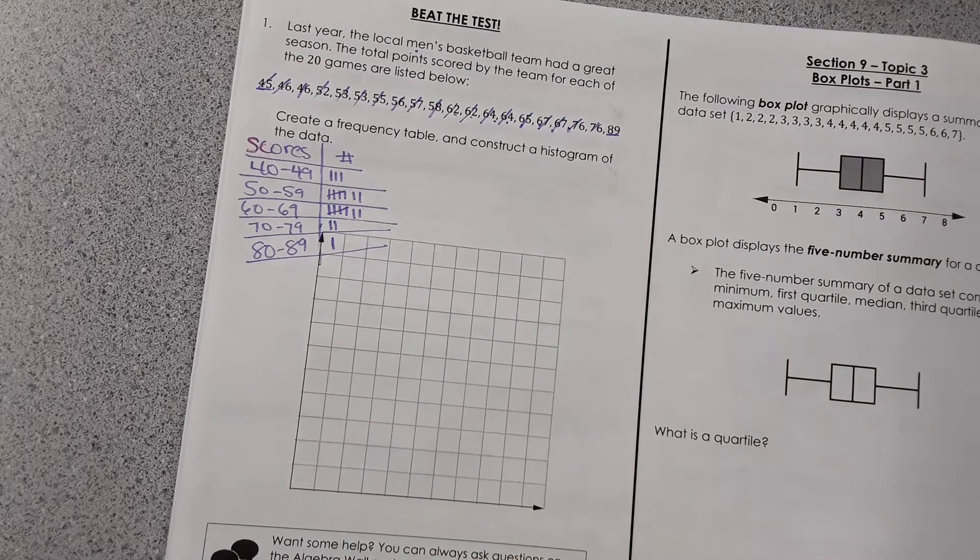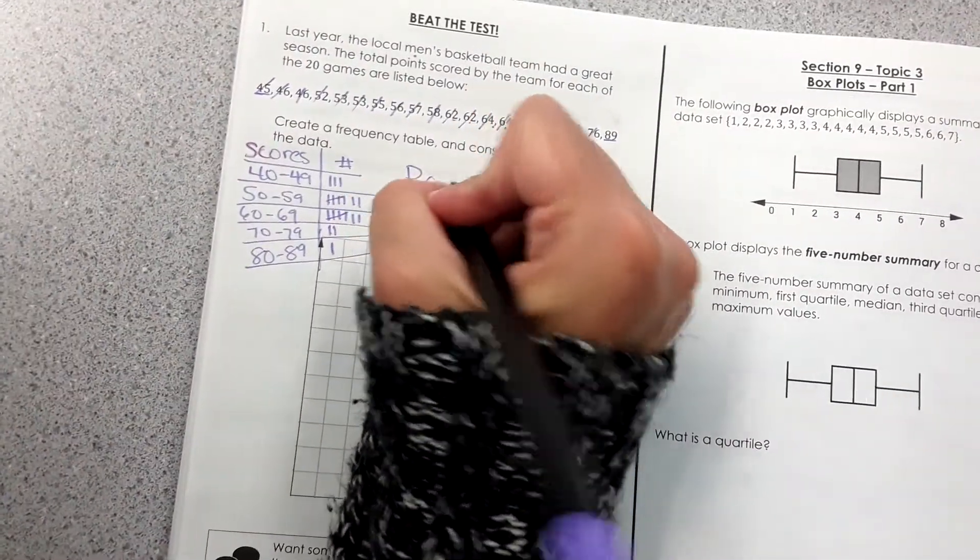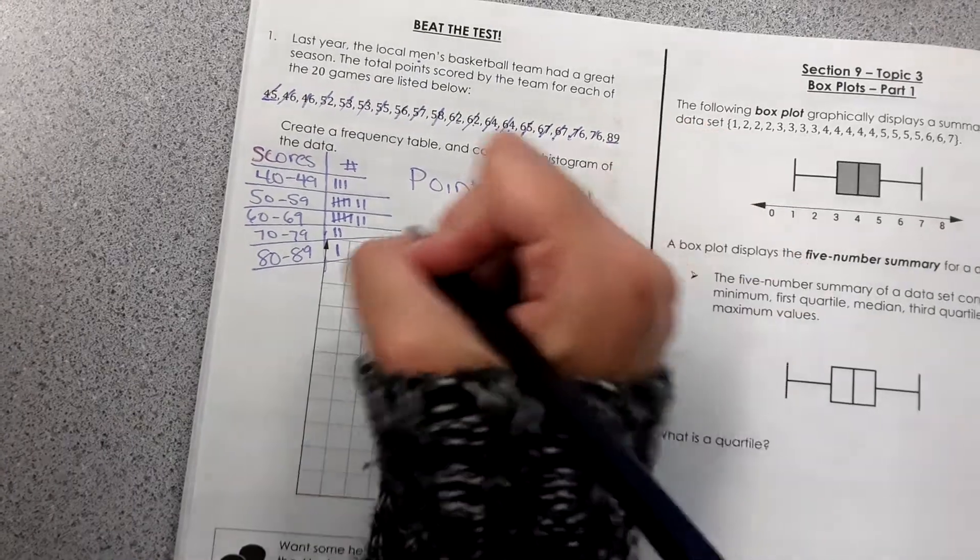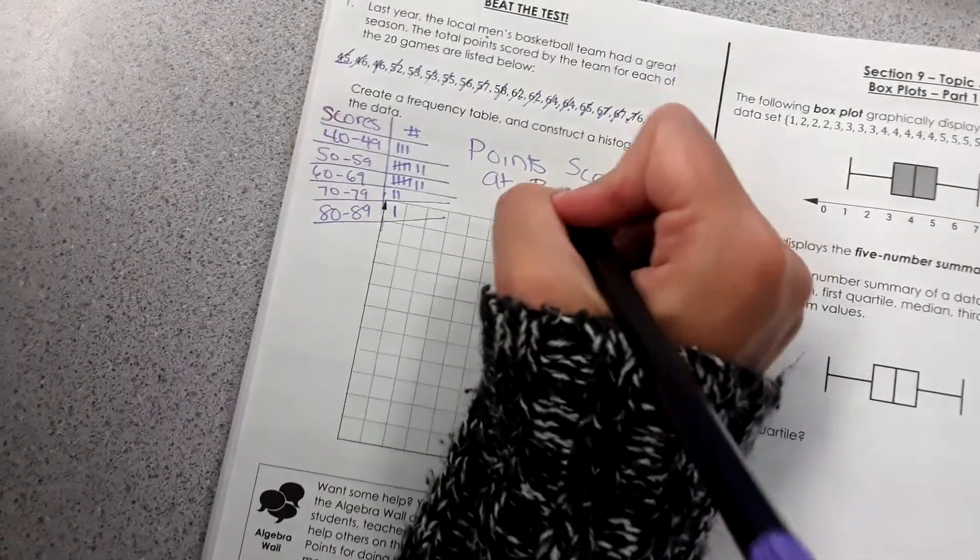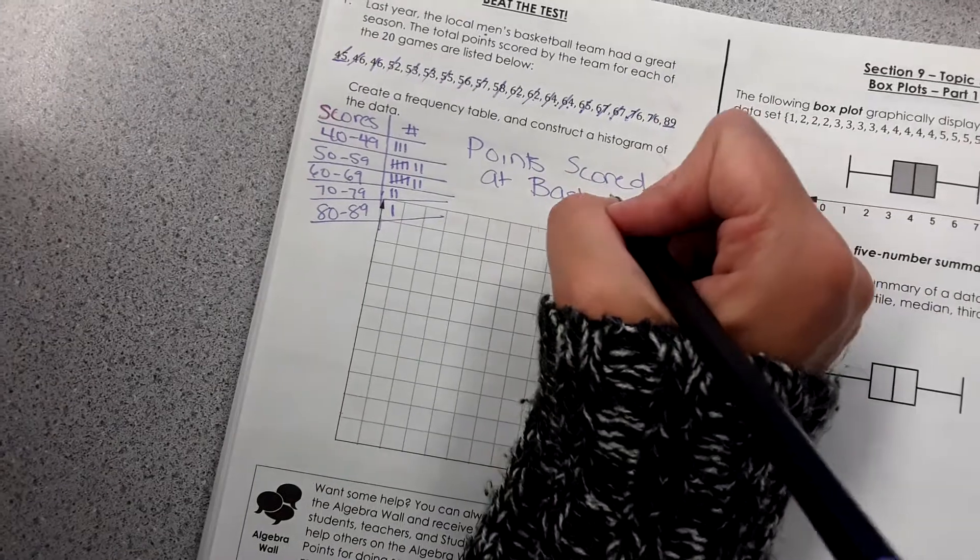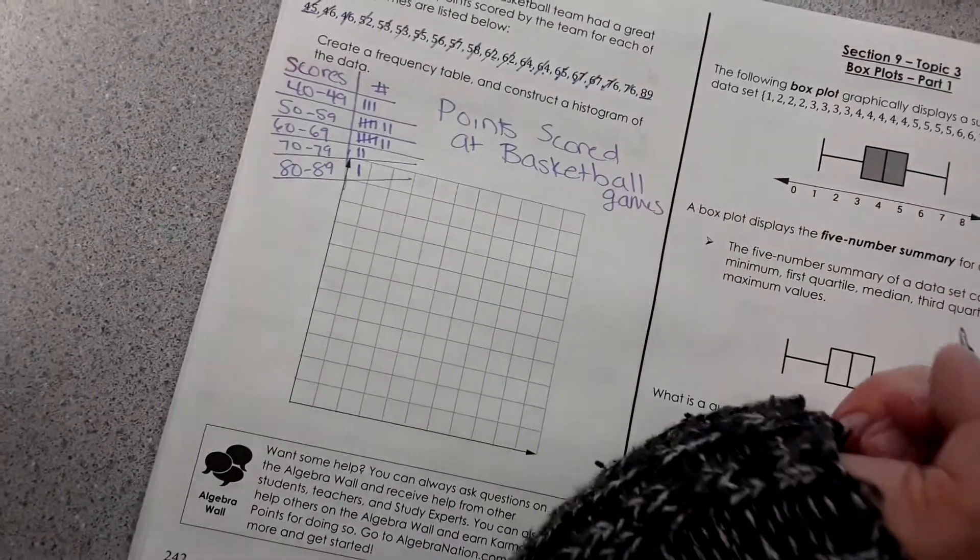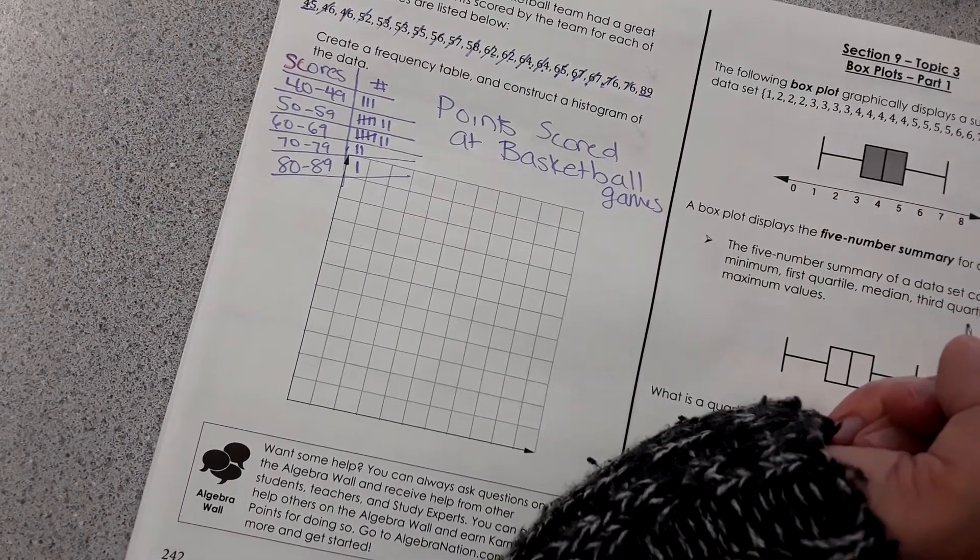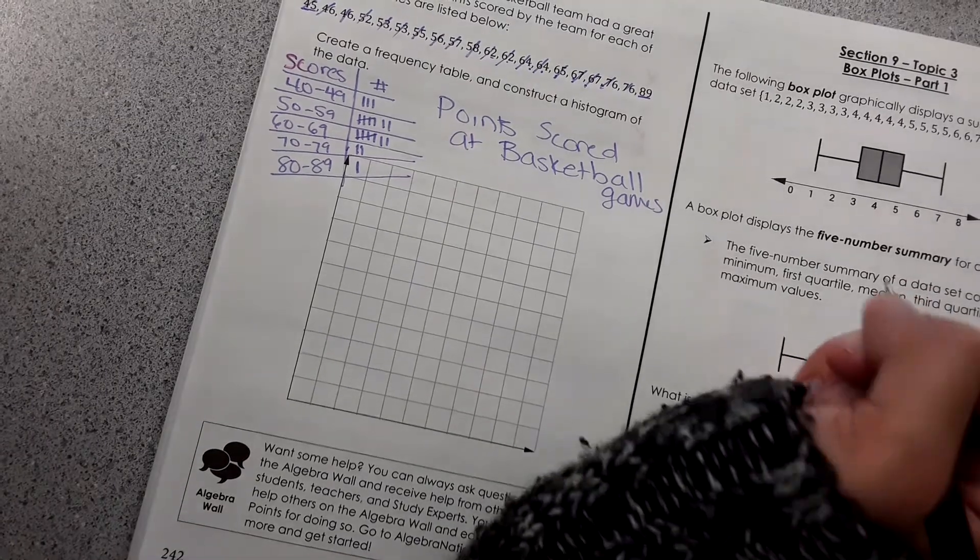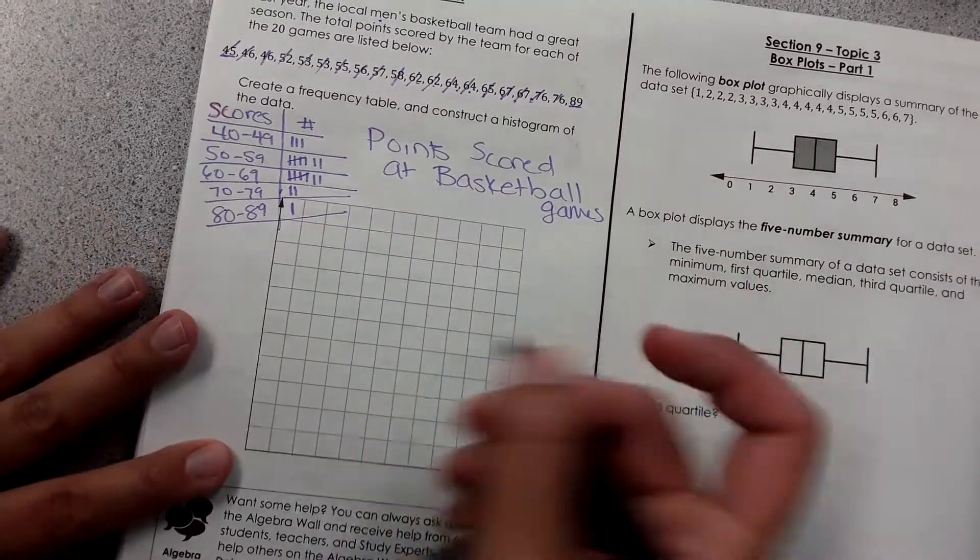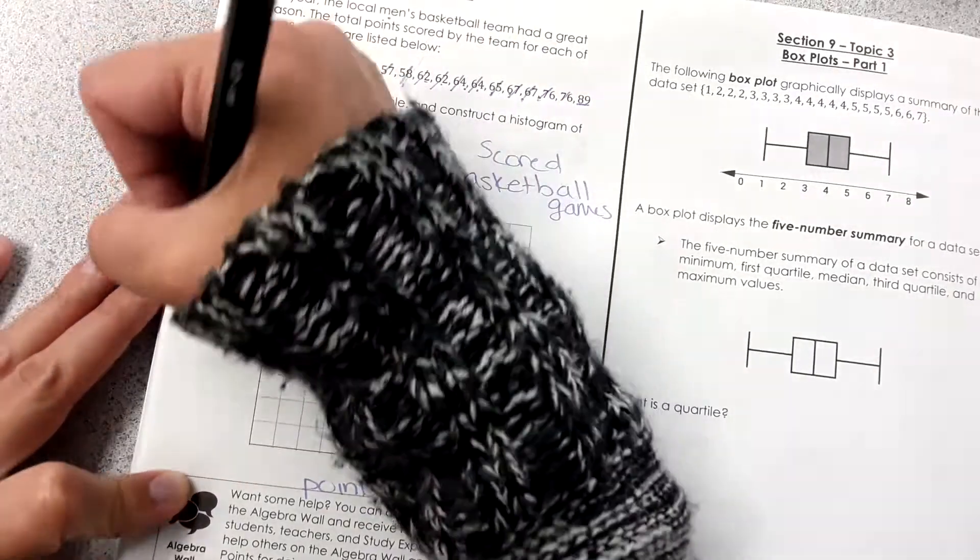Okay, now that I have it tallied, I can start setting up the graph. Okay, definitely label your graph. The title would be points scored at basketball games. Did you know that sports statistics or sports statistician is an actual job? You just use statistics to predict outcomes of games. Or which players would play the best together based on their statistics. You could build teams that way.